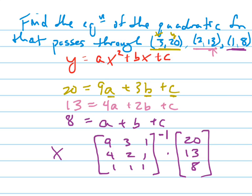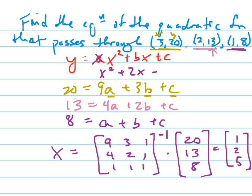Using my calculator, I'll get my three answers, which is a piece of cake. And so your answer is a=1, b=2, c=5. So I'll rewrite my equation: 1x squared plus 2x plus 5. And there's my answer right there.